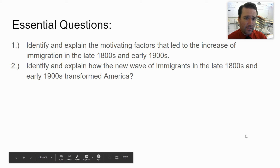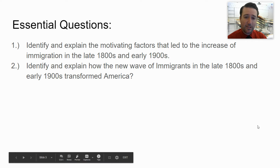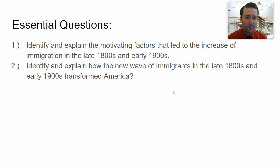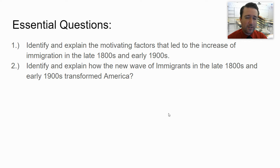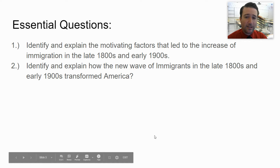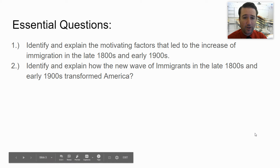The essential questions for today that I'd like you to answer are: first, identify and explain the motivating factors that led to the increase of immigration in the late 1800s and early 1900s; and second, identify and explain how the new wave of immigrants in the late 1800s and early 1900s transformed America. Submit your answers on Canvas.